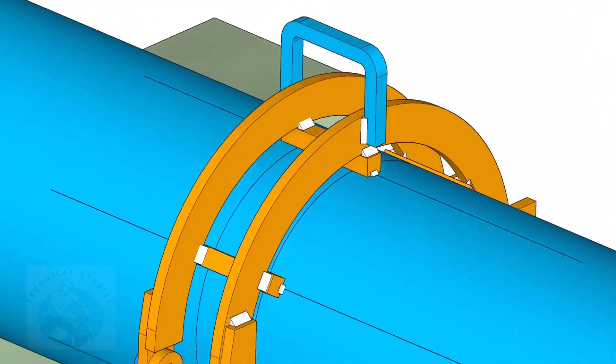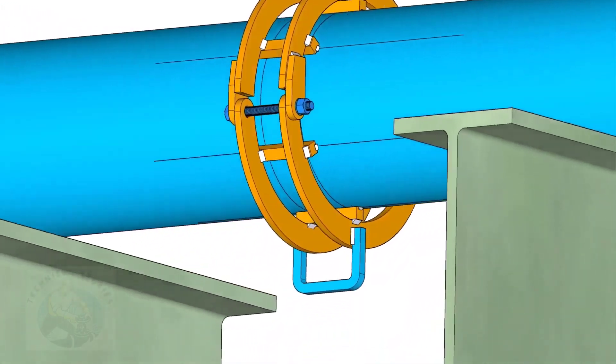After welding, cut the tacks with pipe and the square bars. Grind smooth all parts.